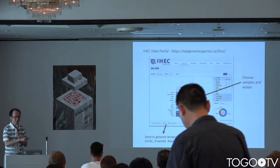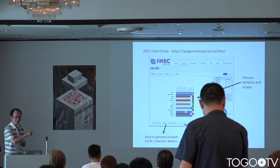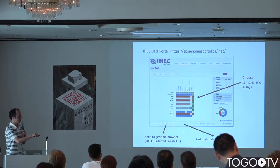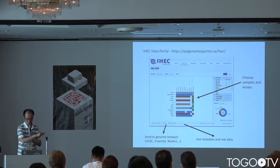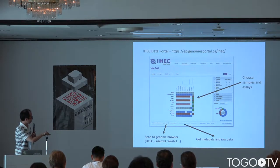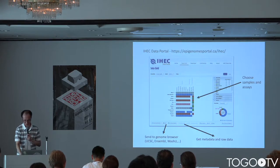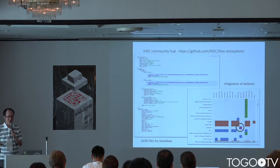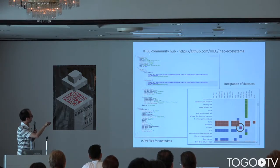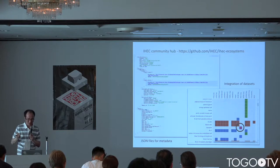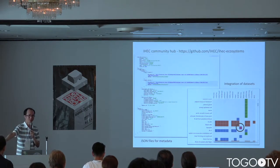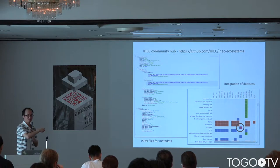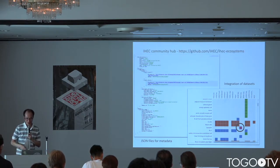I'll briefly explain the IHEC data. The IHEC consortium built a data portal like this — a grid of samples, where the sequencing methods and samples are shown. By choosing samples, you can export this information to several genomic browsers, and metadata is also available. Interestingly, we can add our own data to this data grid using a data hub. I wrote the metadata in JSON format, put it in a location, and loaded this file to the IHEC data portal website to integrate our samples into this dataset.